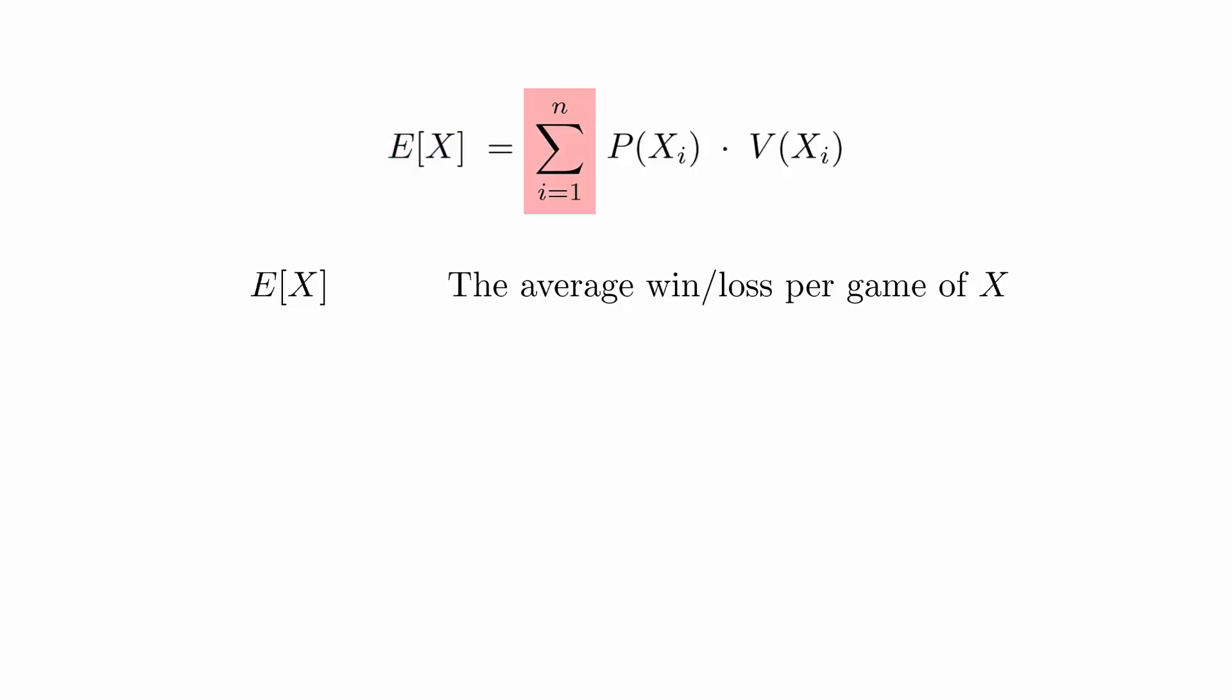This is known as the summation symbol. It is a shorthand notation for adding up several terms that all have a similar form. The variable i is known as the index and it counts from 1 up to n. The value of n is the total number of outcomes.